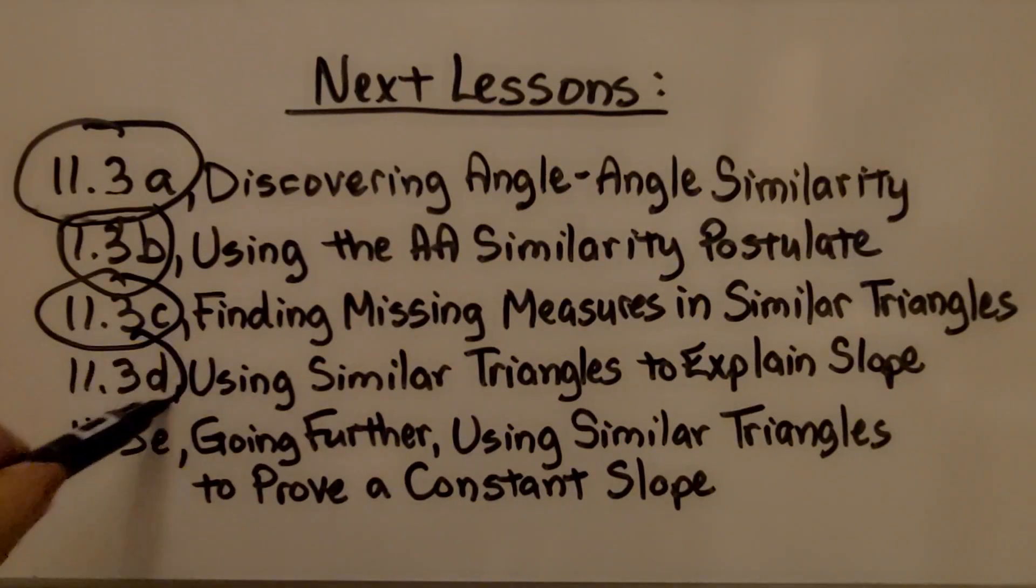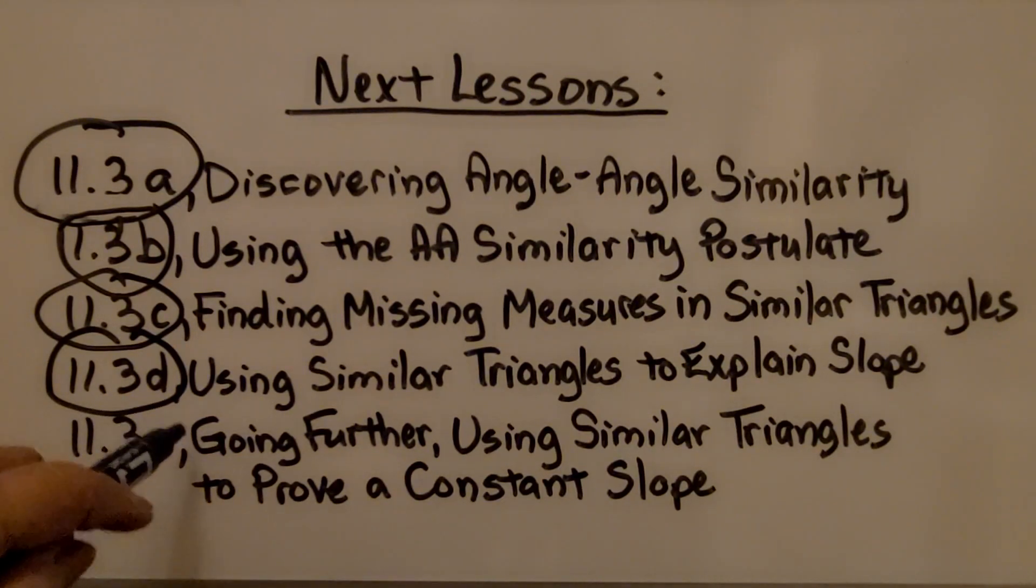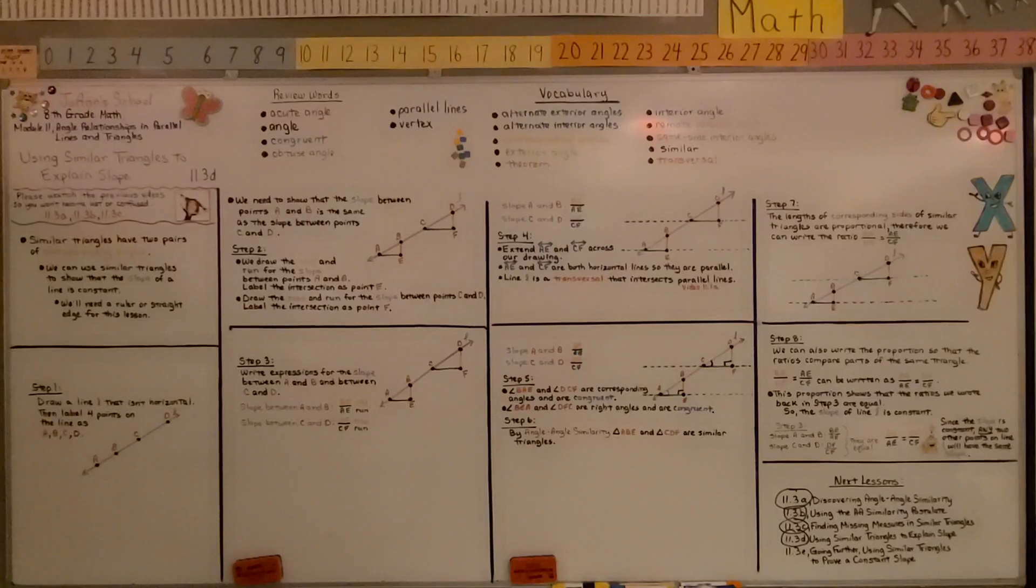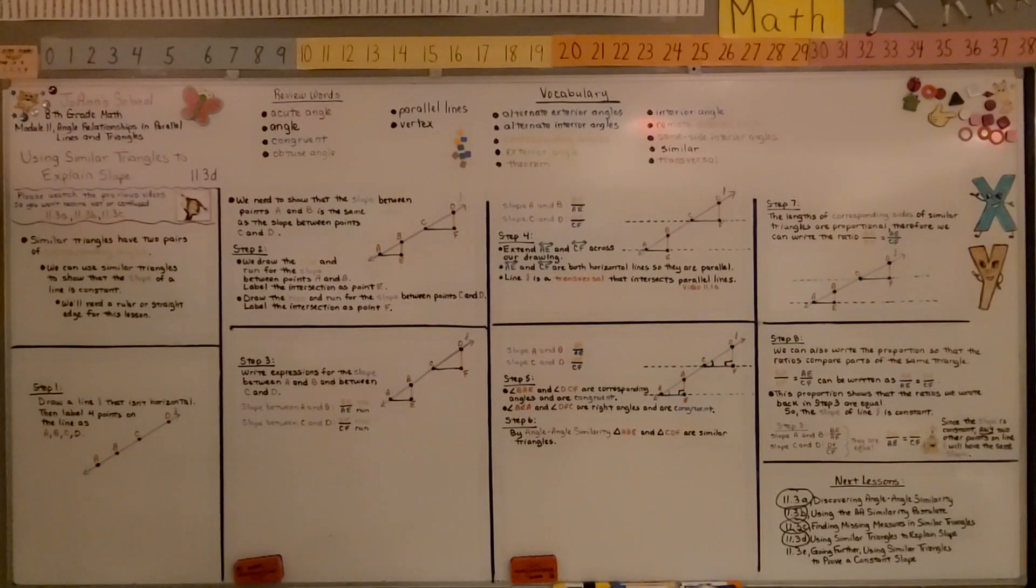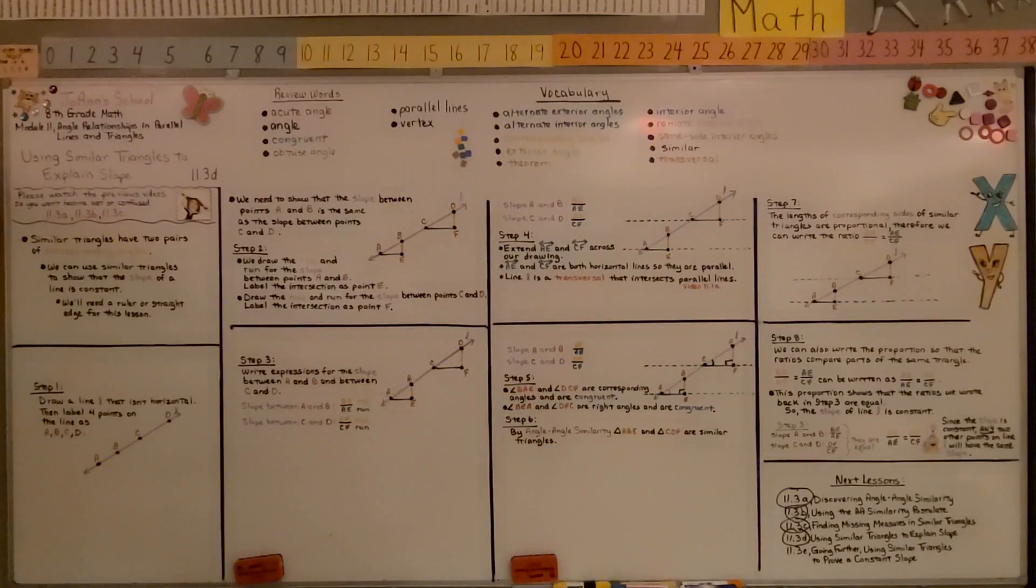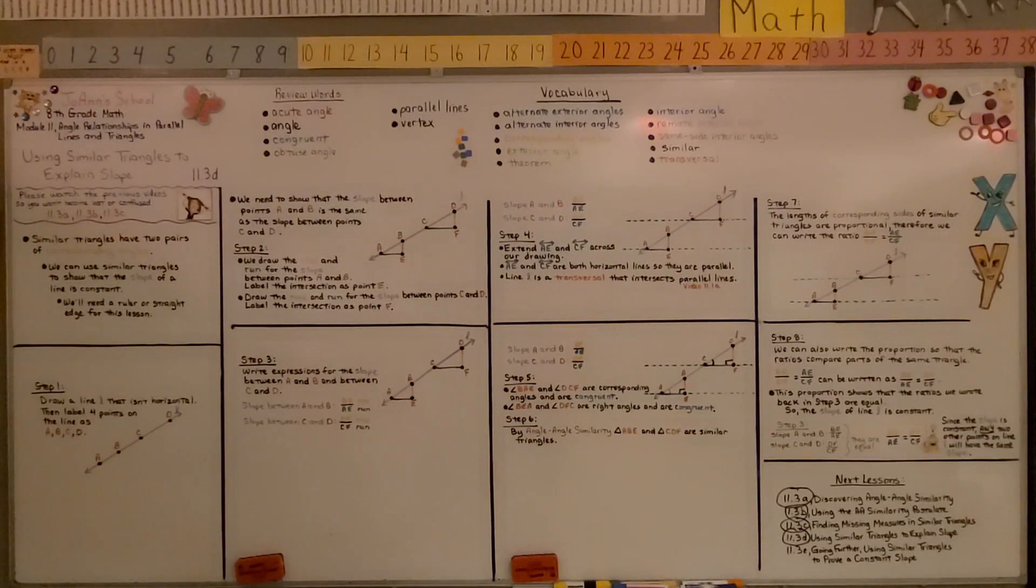We're finished with part D, we're moving on to the last part, going further. That's in between this last part of 11.3, coming before 11.4. We're going to be using similar triangles to prove a constant slope. I hope you enjoy the rest of your day. Keep trying, keep going, and join me for the last part of the lesson. Bye!